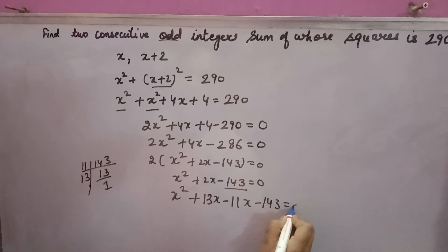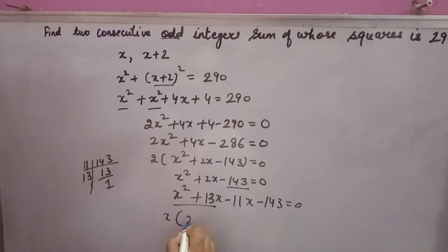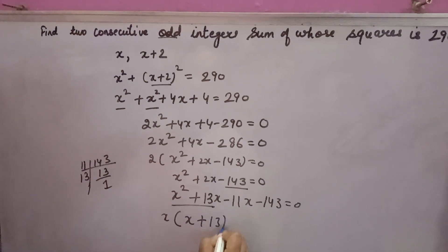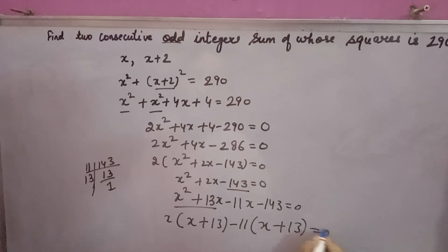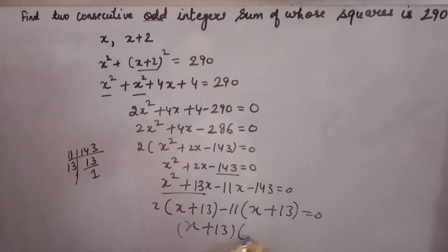Take x common here, 13 remains. Take minus 11 common here, x remains, 13 remains. Then take (x + 13) common, (x - 11) remains. So (x + 13)(x - 11) equals 0.